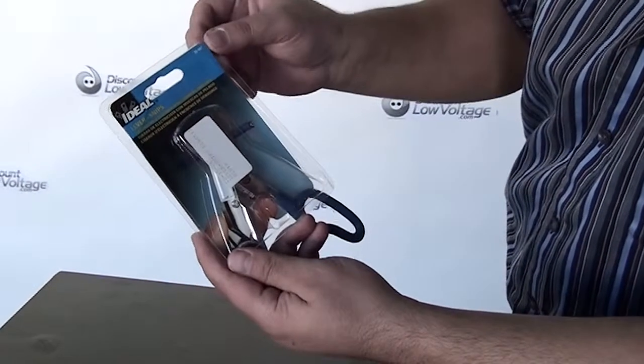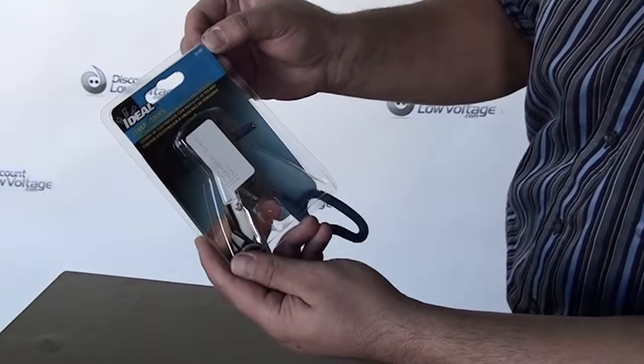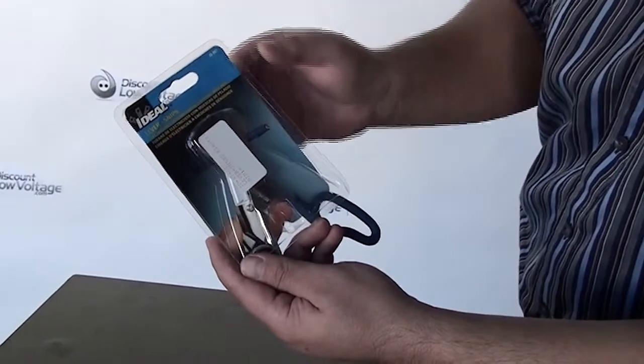Thanks for visiting. Today we're going to take a look at Ideal Industries snips. It's their part number 35-087.